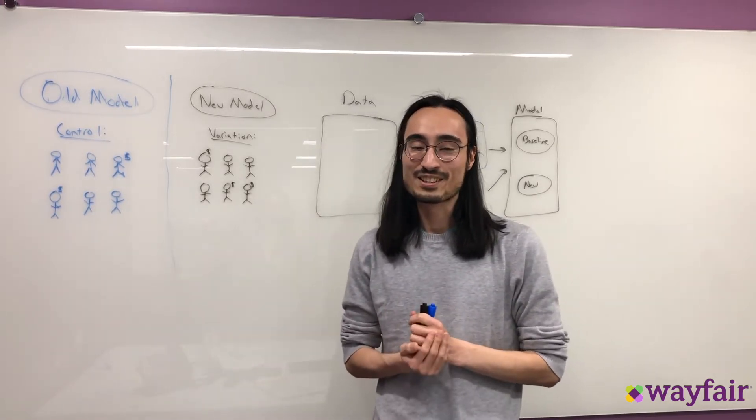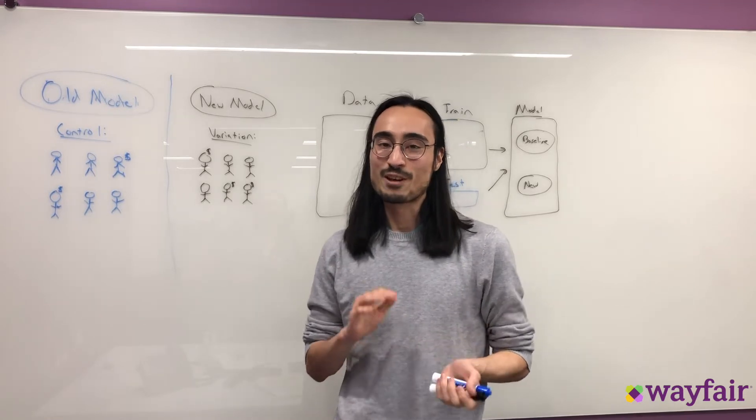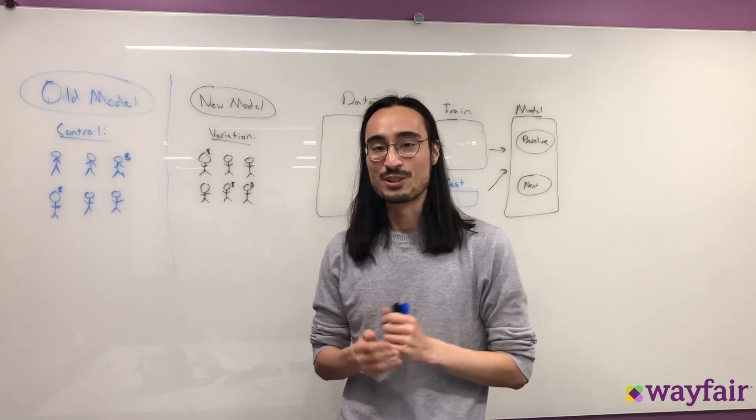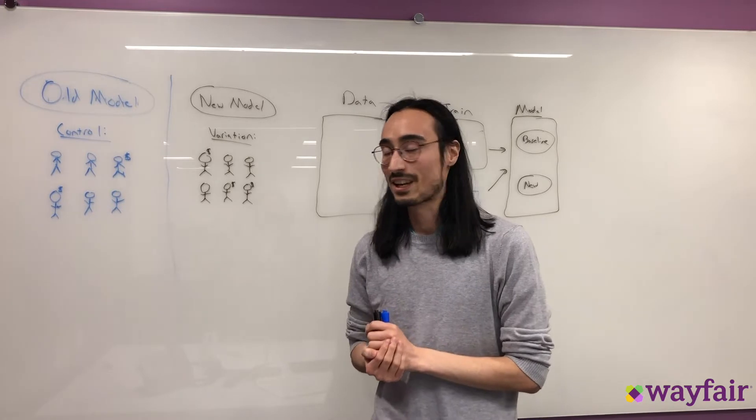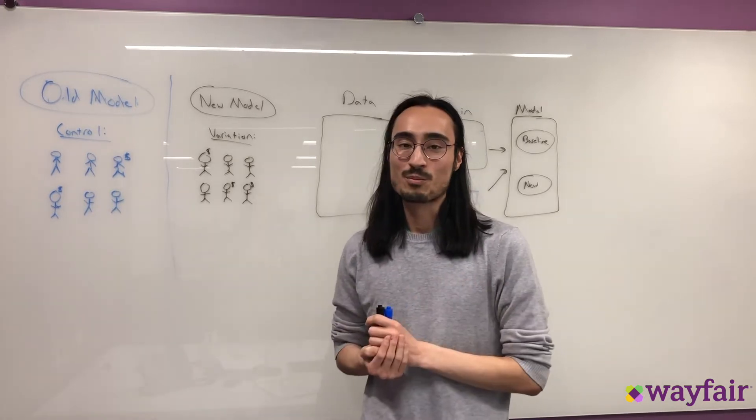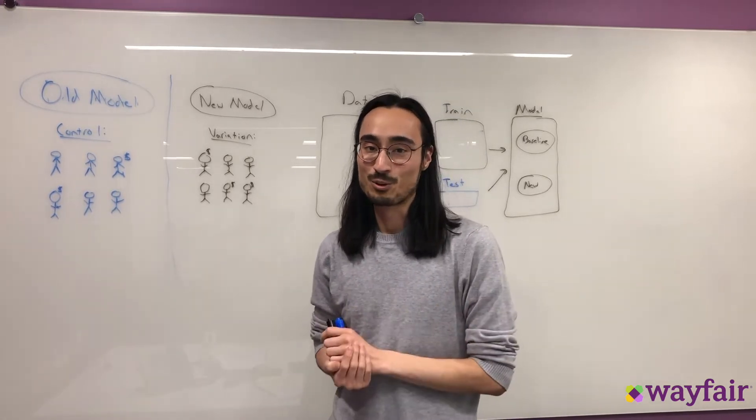Imagine you're a data scientist at Wayfair and you've built out a fancy new recommender system and you want to test against the old one that's on site, but how do you actually go about proving that the new recommender system is better than the old?